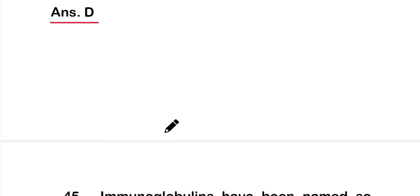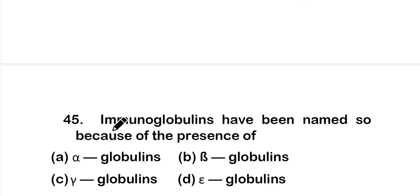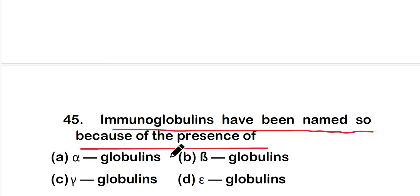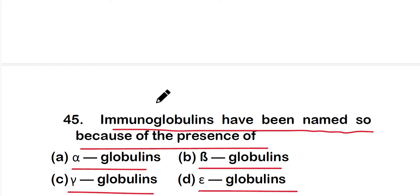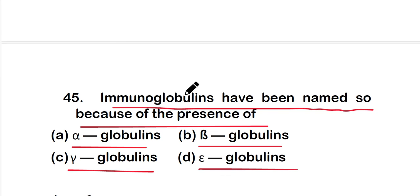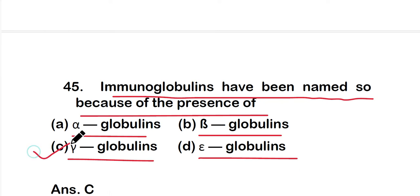Question 45: Immunoglobulins have been named because of the presence of option A alpha globulin, option B beta globulins, option C gamma globulins, or option D epsilon globulins. The correct answer is option C — gamma globulins. Because of the presence of gamma globulin, they are called immunoglobulins.